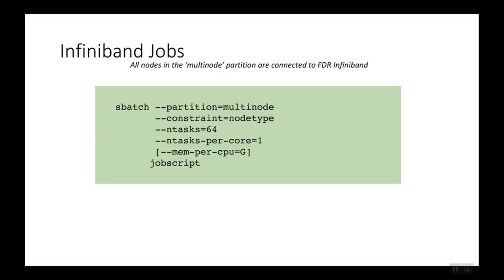Each core has two CPUs, but those CPUs share computing resources and can't both operate at full speed. Most molecular dynamics jobs are compute-bound — dependent on good access to CPU resources. If you had two MPI ranks running on two CPUs on the same core, they would contend for those computing resources and run less efficiently. You can also specify the amount of memory per CPU you want, and you have to provide a job script.